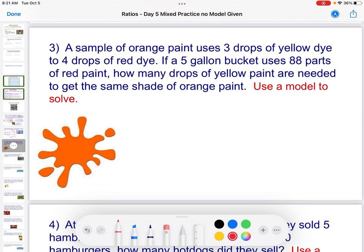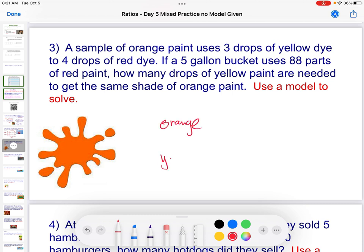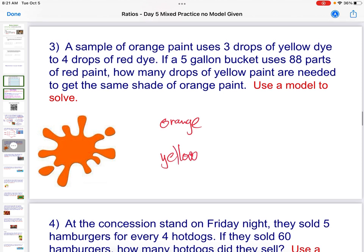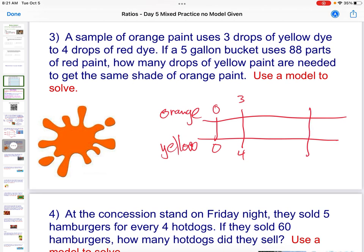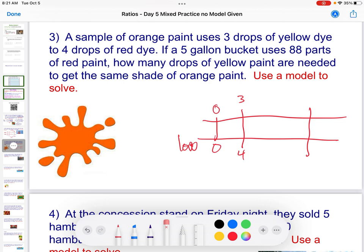A sample of orange paint uses three drops of yellow for four drops of red. If a five-gallon bucket uses 88 parts of red, how many drops of yellow are needed? So orange to yellow. Zero. And we're just going to draw that out, zero to zero. And it takes three drops of orange and four drops of yellow. I'm sorry, to make orange, I need three drops of yellow and four drops of red. I'm sorry about that. And so how do I get now 88 parts of red?